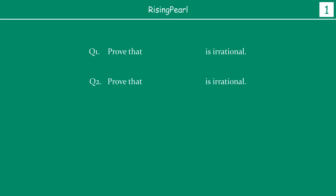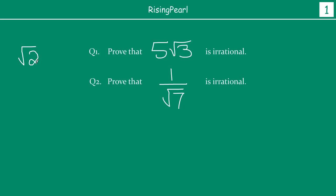What kind of irrational numbers are we going to prove? We are going to prove something like: how do we know that 5 times square root 3 is an irrational number? Or maybe 1 divided by square root 7 is an irrational number. In the last video, we saw how we can prove square root 2, square root 5, or square root 11 are irrational numbers.